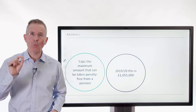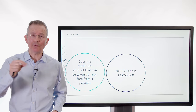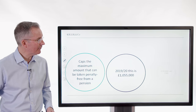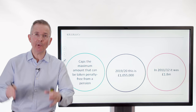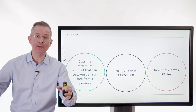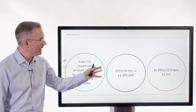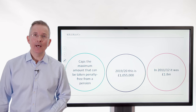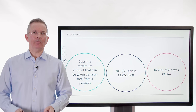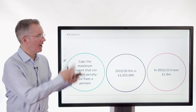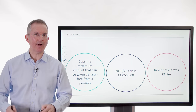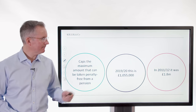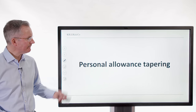There are two reasons it's sneaky: it was introduced a few years ago, and it's come down from where it was — it used to be £1.8 million, now it's just over £1 million. People need to be aware of this sort of thing and plan accordingly.